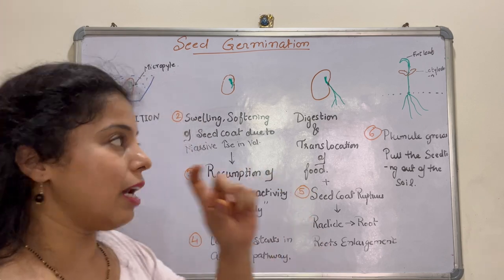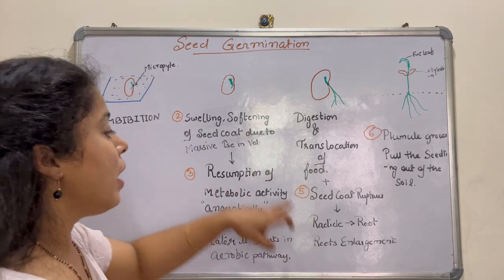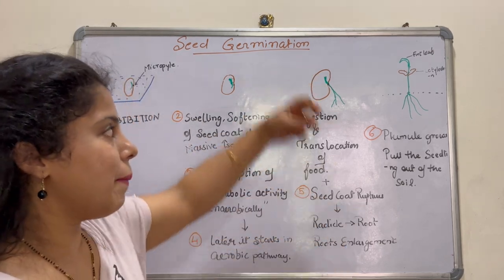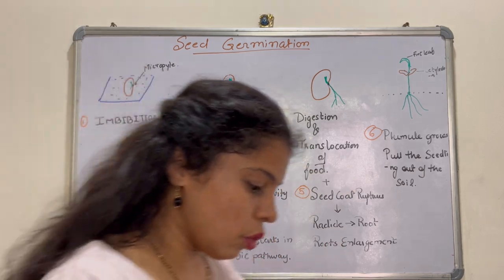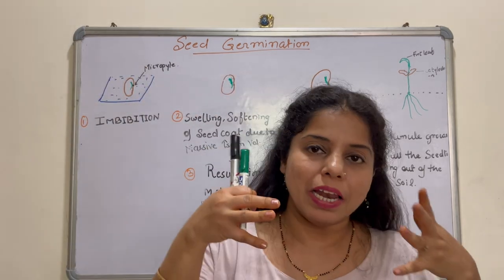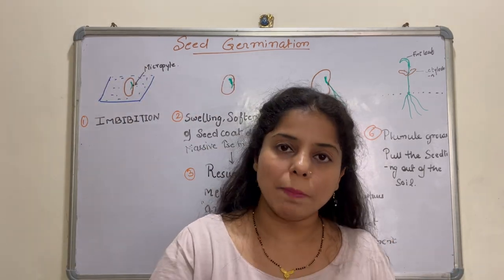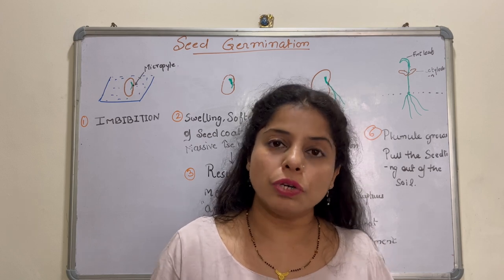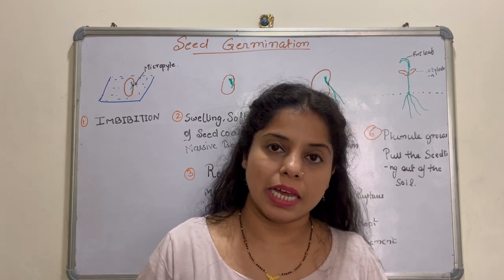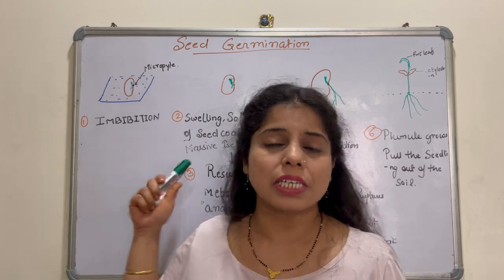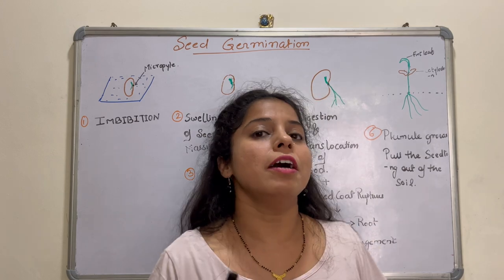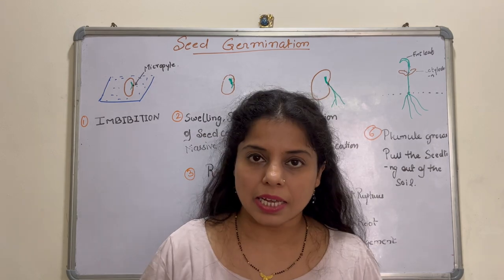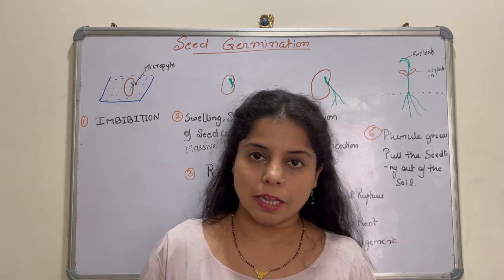Through the micropyle, a tiny initial root — the radicle — emerges. The root is the organ which can naturally absorb nutrition from the soil, supplementing the endosperm or cotyledon as the plant's food source.